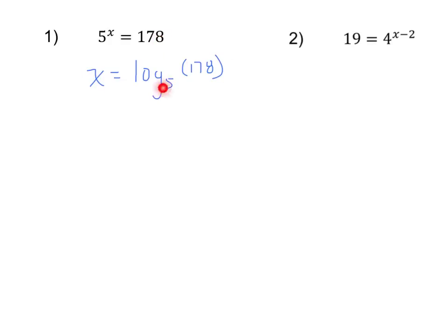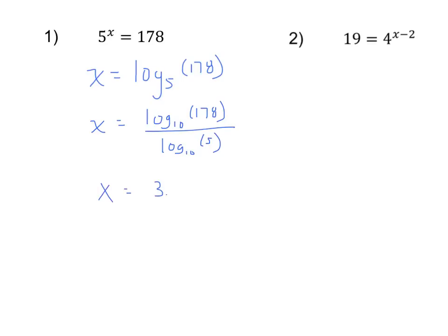Once we get this answer, we can put it into our calculator. In the calculator, we would do x equals log base 10 of 178 divided by log base 10 of 5. When you do that in your calculator, you should get 3.22.